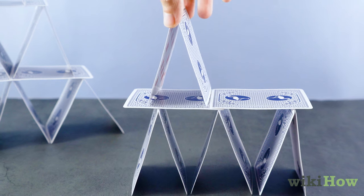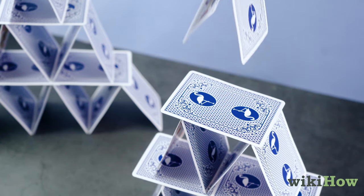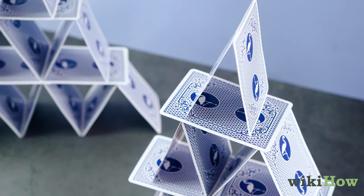Next, place an apex on top of each horizontal card. Your tower is finished when there's only room for one last apex at the very top.